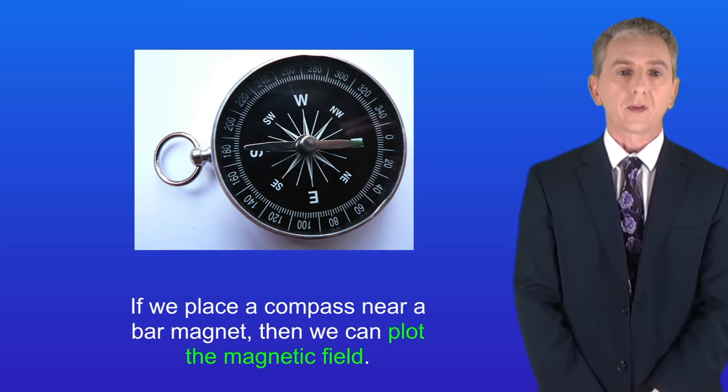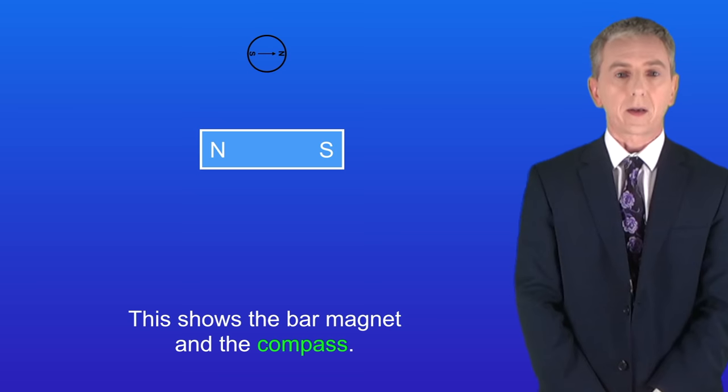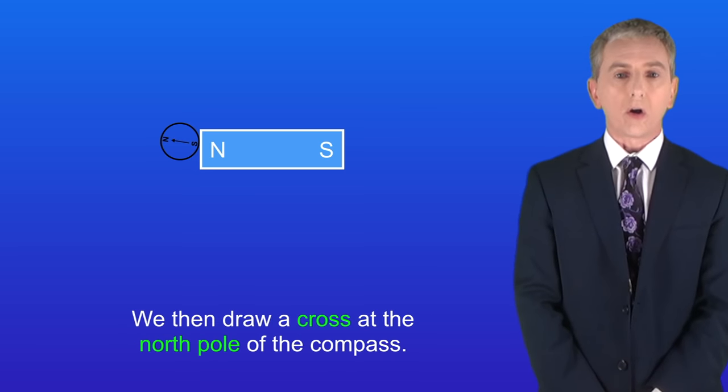If we place a compass near a bar magnet then we can plot the magnetic field. So I'm showing you here the bar magnet and the compass. First we place the compass near the north pole of the bar magnet. We then draw a cross at the north pole of the compass like this.